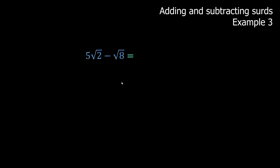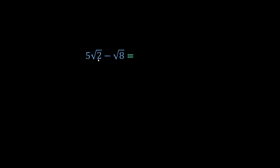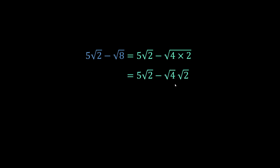Five root two minus square root of eight. This doesn't look like you can subtract them, but you can because square root of eight can be simplified. Eight is four times two, which is square root of four times square root of two, which becomes two root two. So now we have five root two minus two root two, which gives us three root two.